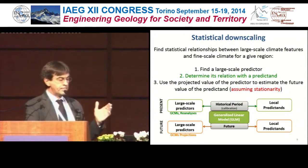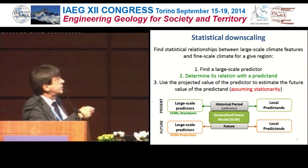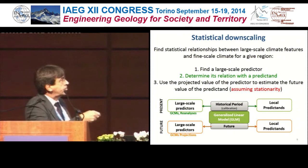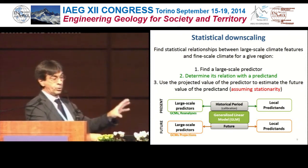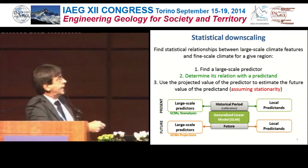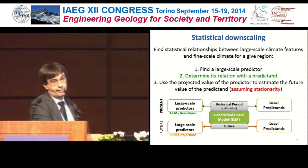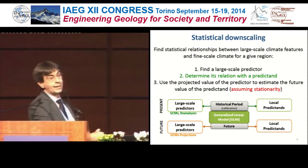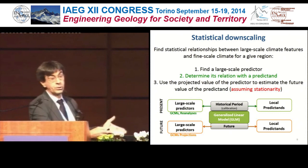Another approach is statistical downscaling, probably more familiar to most. You look at today's data using large-scale predictors from reanalysis or global climate models, and a local predictor such as rainfall in a given valley. Over the historical period you use statistical models such as a generalized linear model to get a relationship between the two. This relationship is true only at a very local scale. Then you apply the same GLM to future projections to get predictions for your valley. The two drawbacks are that it works only for a given place, and you assume stationarity of the relationship between large-scale and small-scale predictors, which is not assured.